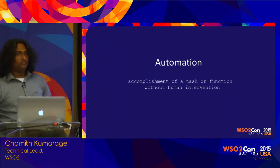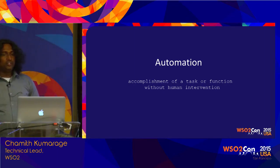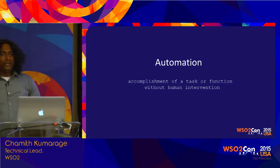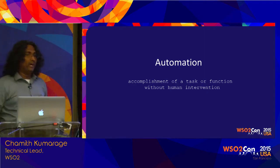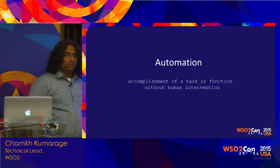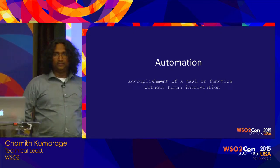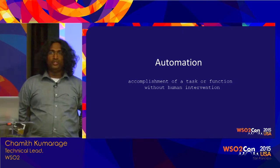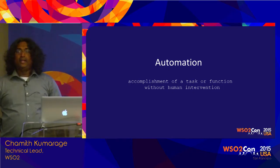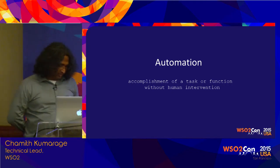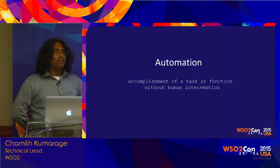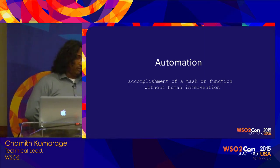So what is automation? If you take the literal meaning, it means accomplishment of a task or function without human intervention. How do you figure out what to automate? You might have seen lots of things in day-to-day work. How do you decide what tasks to automate? The most popular answer is things we do repeatedly, things that are taking time, and things we have to attend to on a daily or regular basis — we automate such things.